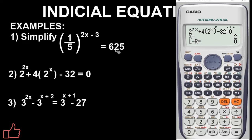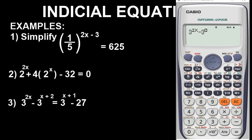Let's solve one more example — example 3 — and after it we'll call it a class. Example 3: we have 3 to the power of 2x, then minus 3 to the power of (x plus 2), plus 3 to the power of (x plus 1), and then minus 27.